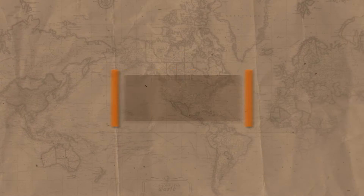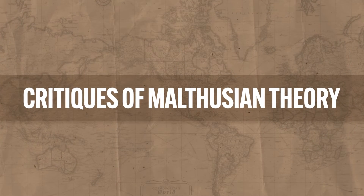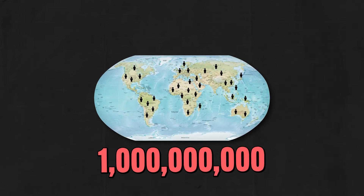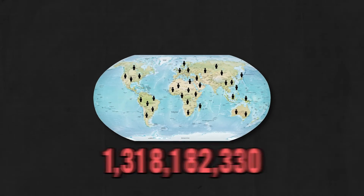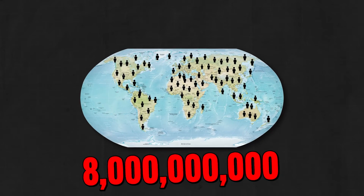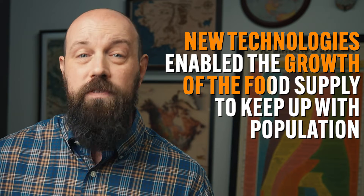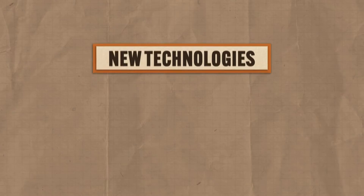Now, in case you're not paying attention, let me point out that Malthus was wrong. When Malthus published his sour-tasting essay, there were about a billion people on the planet. Today there are about eight billion, and so far we haven't been made to endure the cycle of misery and apocalyptic end of humanity that Malthus predicted. A couple centuries later, we can see what Malthus could not — namely that new technologies enabled the growth of the food supply to keep up with the population.